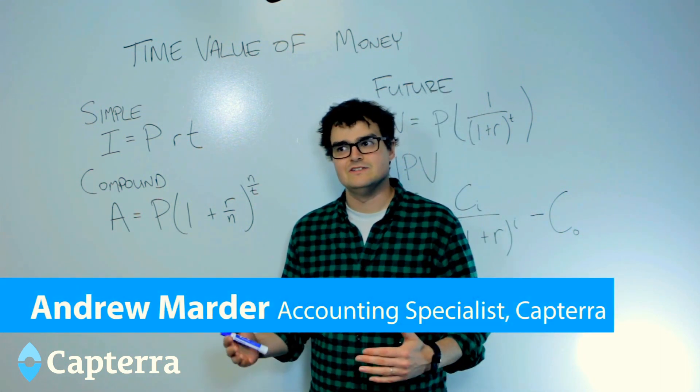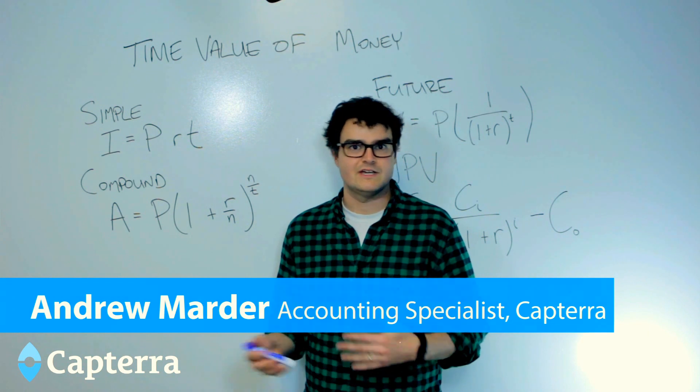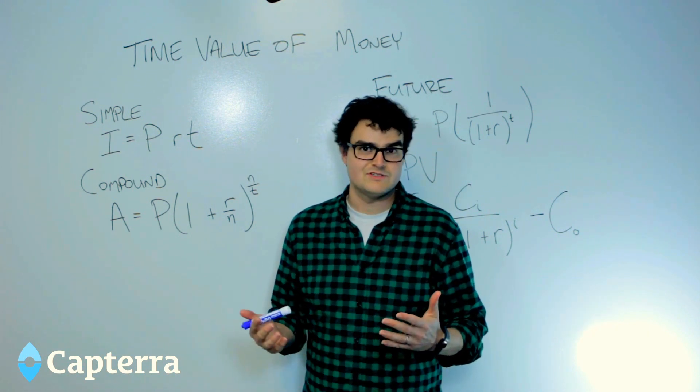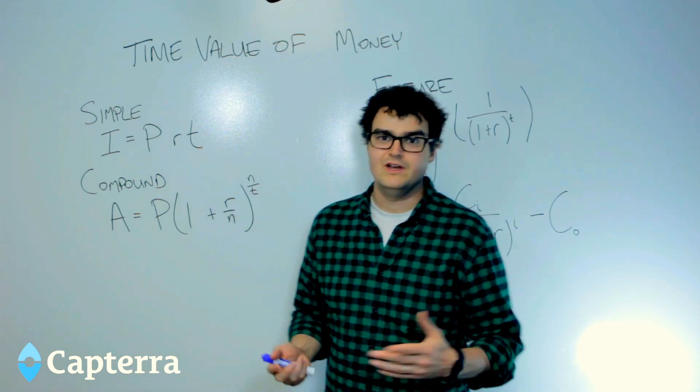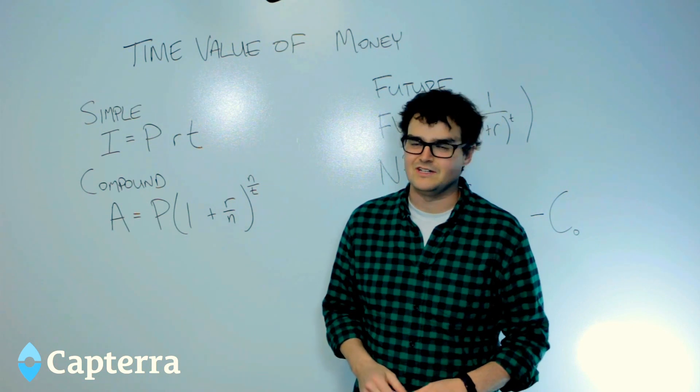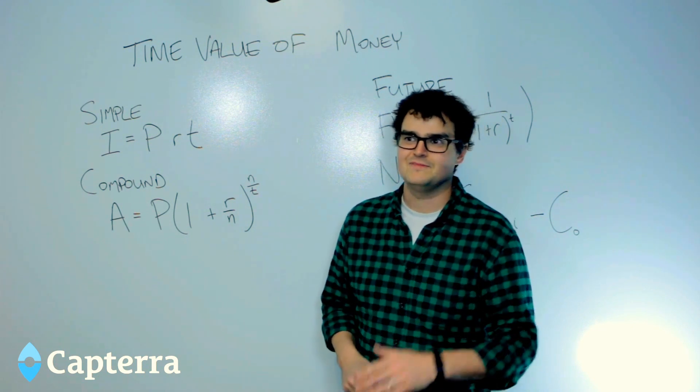The time value of money is commonly associated with things like interest and compound interest, which Albert Einstein famously said was the eighth wonder of the world. That doesn't make any sense, and he didn't actually say it. Any time you hear a quote from somebody that's interesting, it's probably fake. So ignore that.